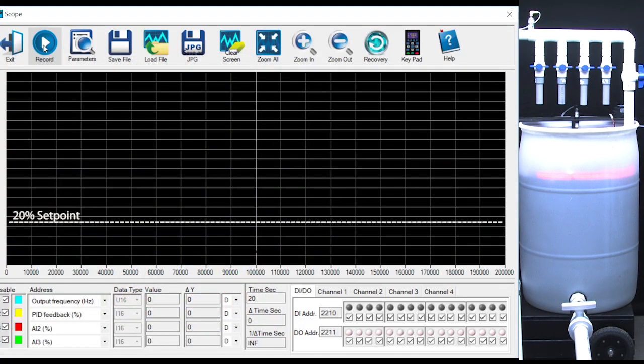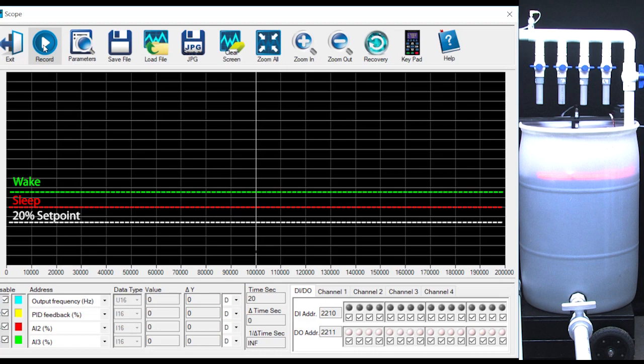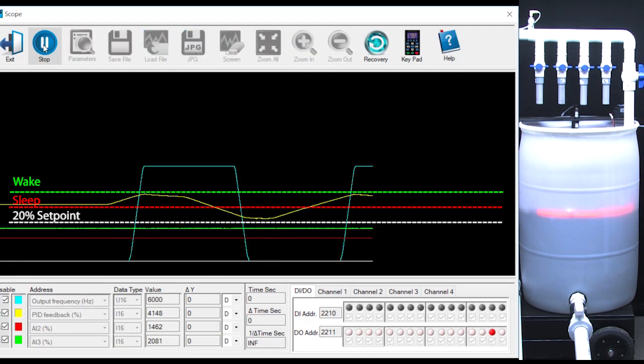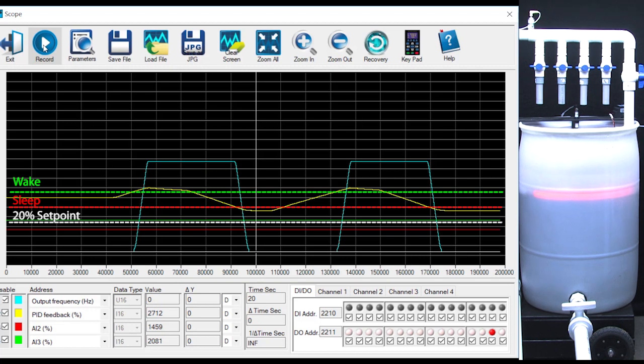So the sleep level should be at 150% of that, which is roughly here, and the wake level should be 200% of that, which is roughly here. Run a couple cycles and sure enough, we see the drive wake up the motor after crossing the new wake up level and the drive turned the motor off at the new sleep level. Again, those levels were automatically adjusted relative to the new set point that we entered.